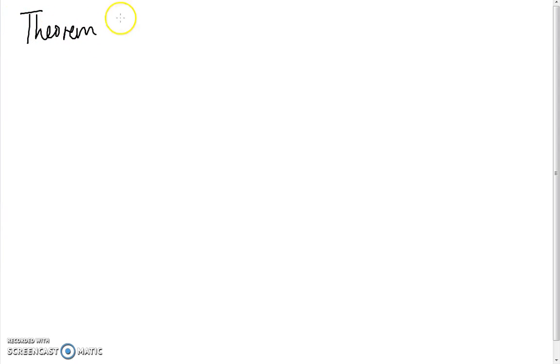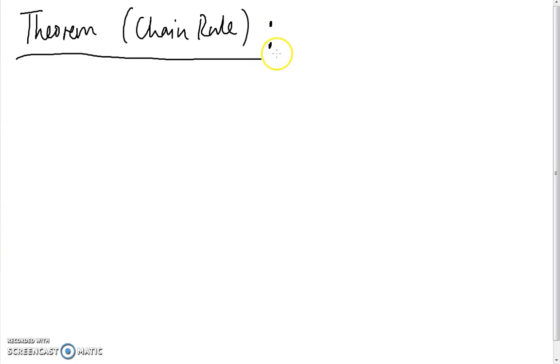Hello. In this video I will introduce and prove the chain rule for functions with domain and codomain that are subsets of the real numbers. First of all, I'll introduce what the chain rule actually is, and essentially it concerns the derivative of the composition of two functions. The chain rule can be summarized as follows.